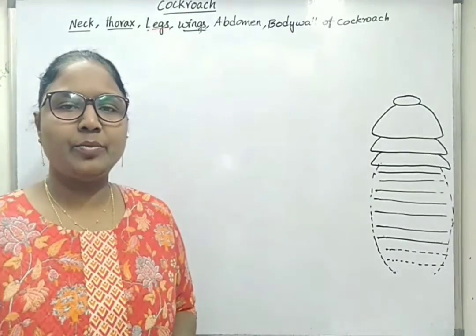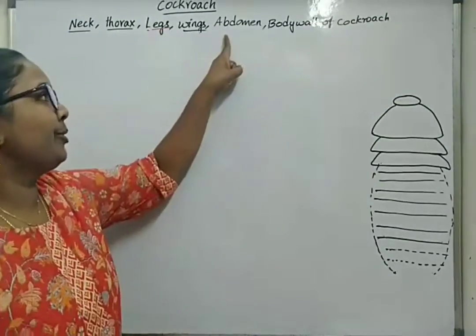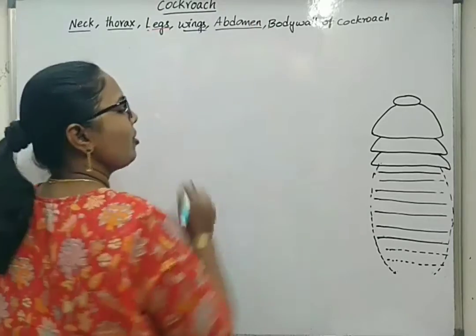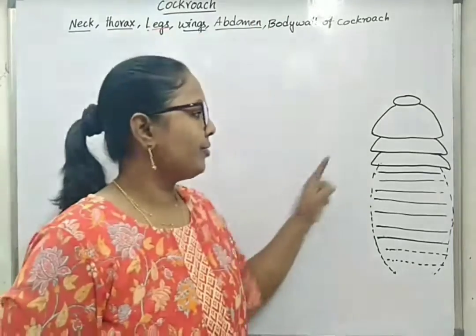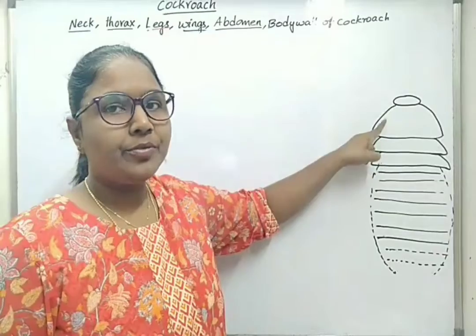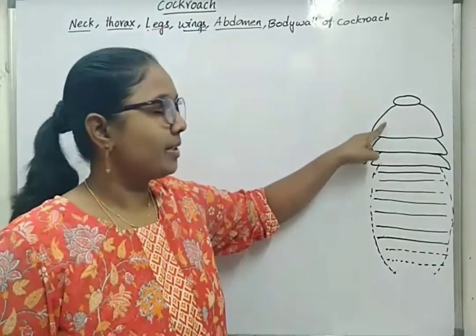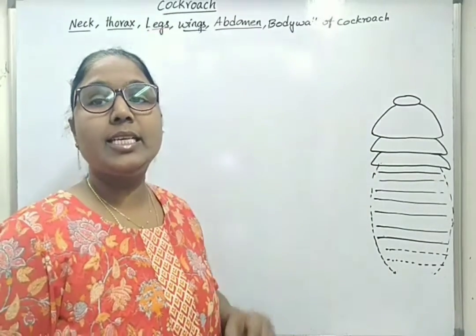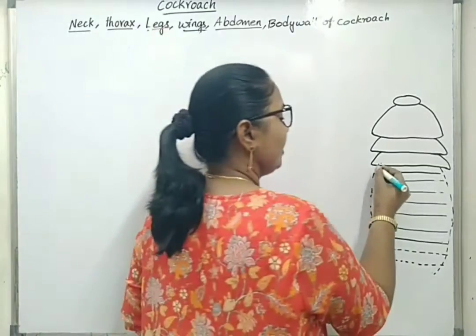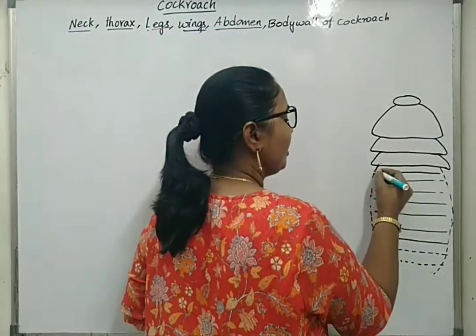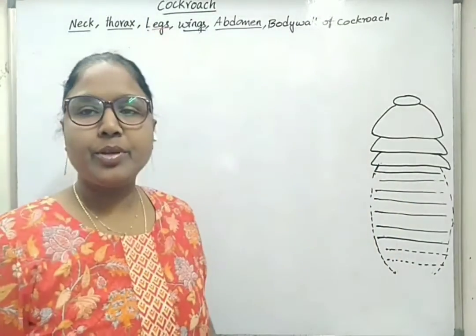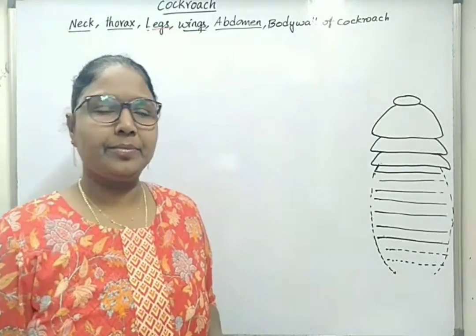Hello students. Now we will discuss about the abdomen region and the segmentation distribution in cockroach. In case of thorax, there are three number of segments. The thorax is also called the second tagmata. Next, in case of abdomen, the total number of segments are 10 in number.